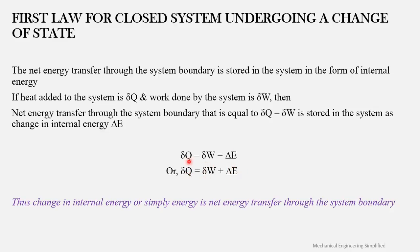So δQ = δW + δE is the expression for the first law for a closed system undergoing a change of state. In the case of a cyclic integral, the change in internal energy is zero, giving δQ = δW, because in a cycle the initial and final points are the same. In any process or change of state, δE will not be zero.